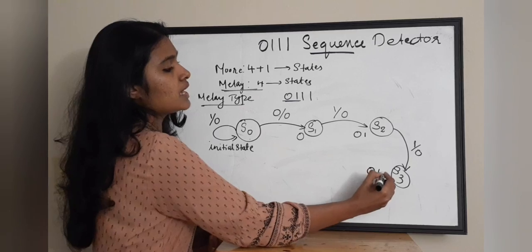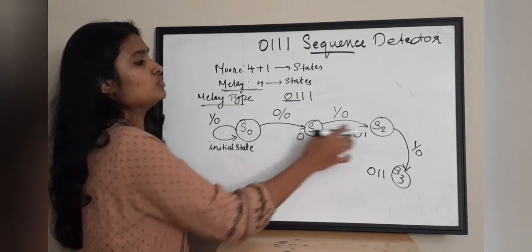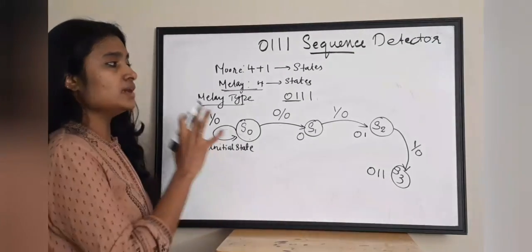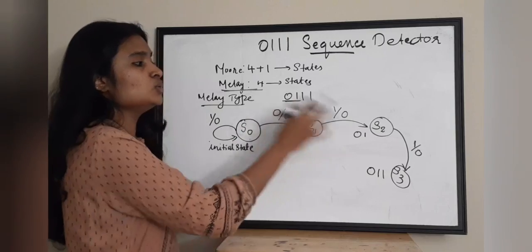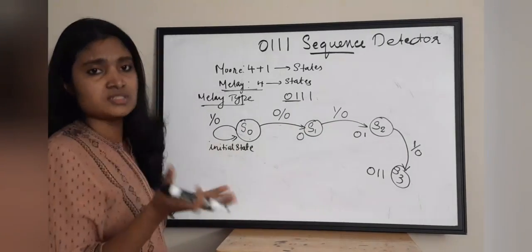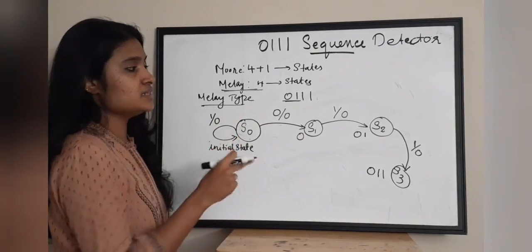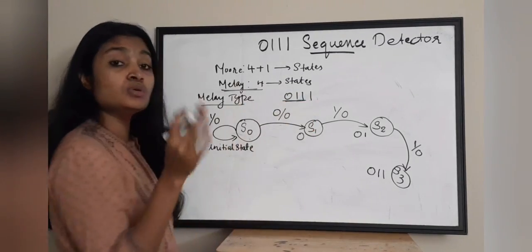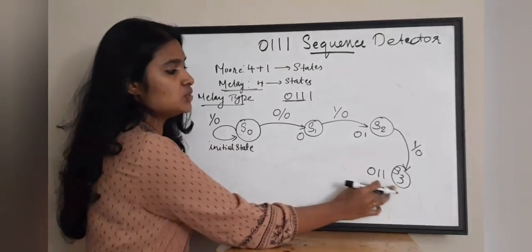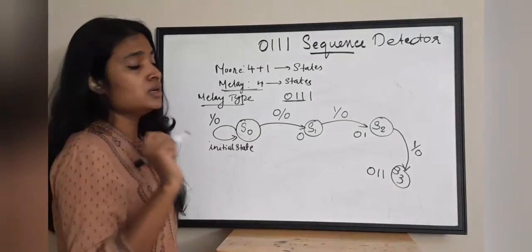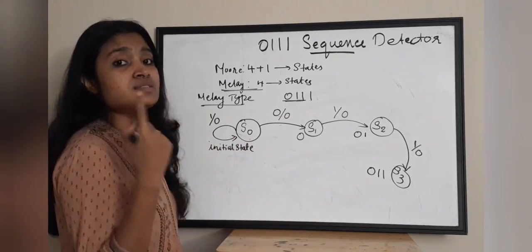In S2 state you have 0 1 in hand. If you receive a 1 you move to S3, but output is again 0. In S3 state you have 0 1 and 1. In a Mealy type state diagram with a 4-bit sequence, you can only use 4 states. From S3 you have to complete the detection — you need to receive one more 1.